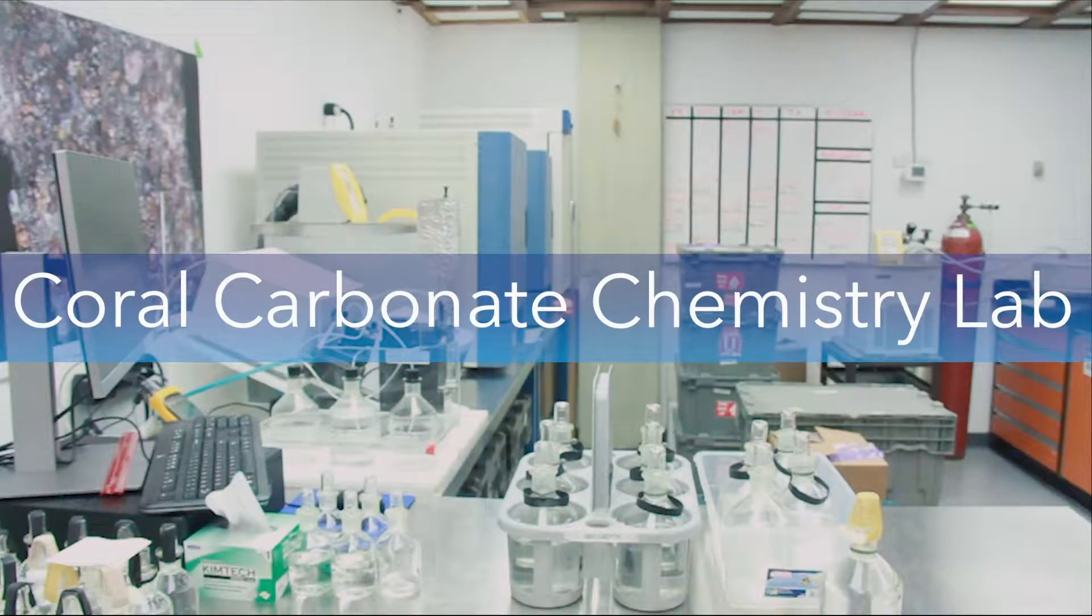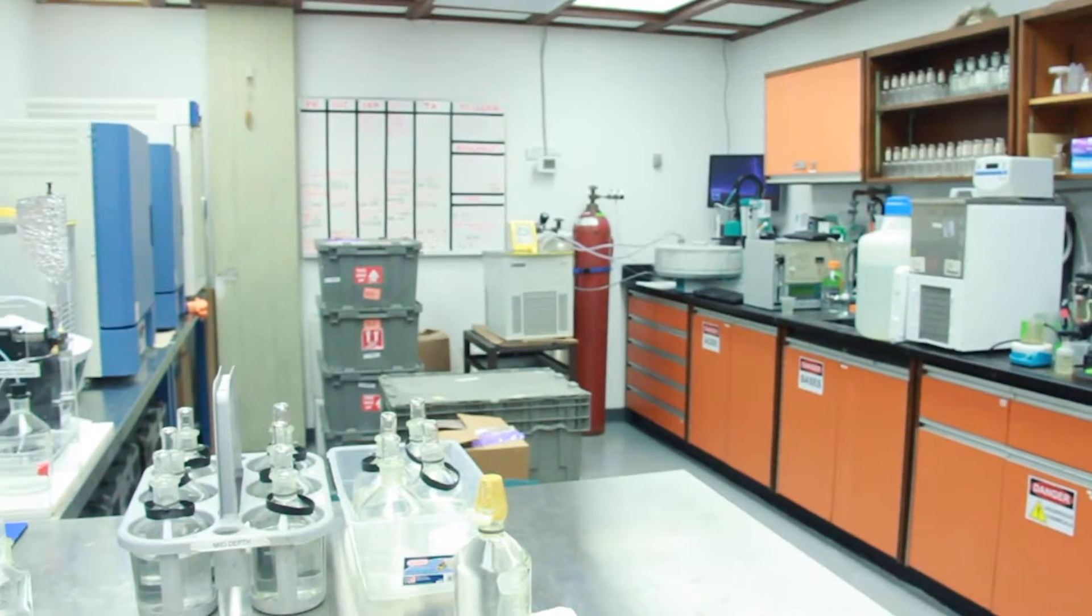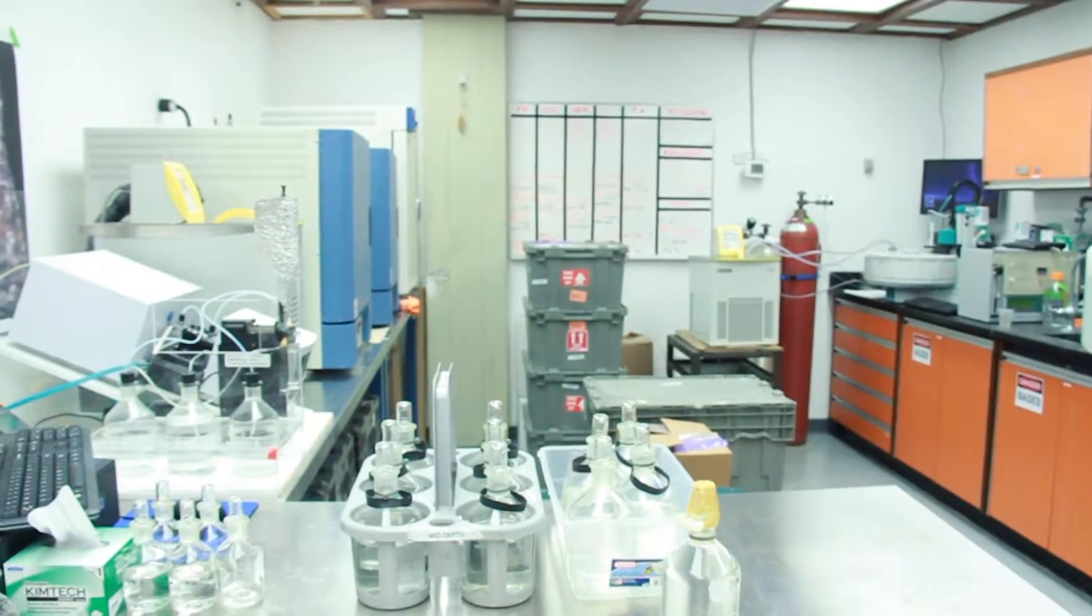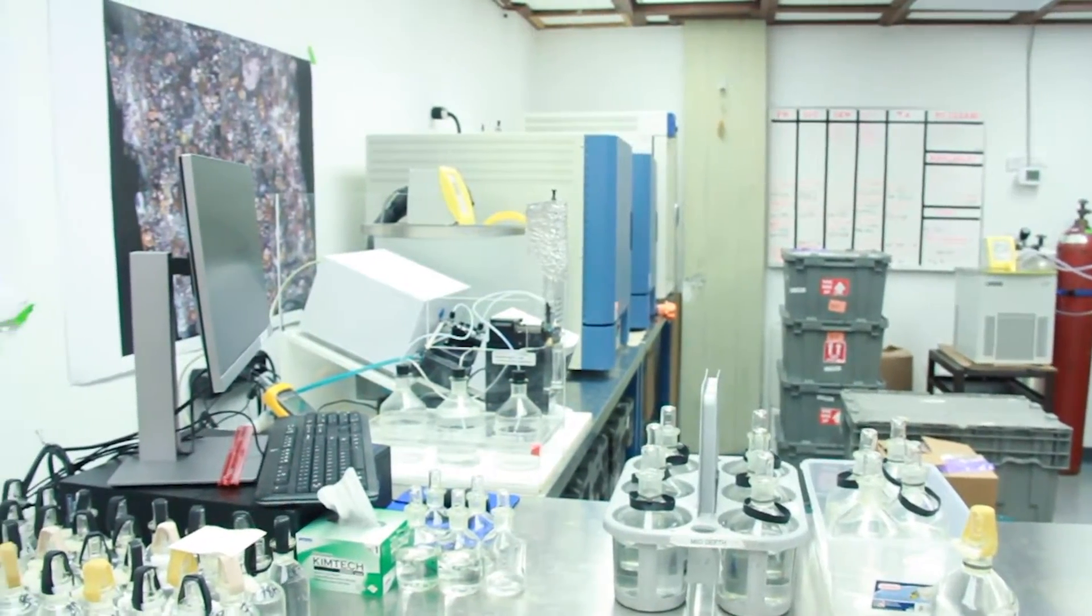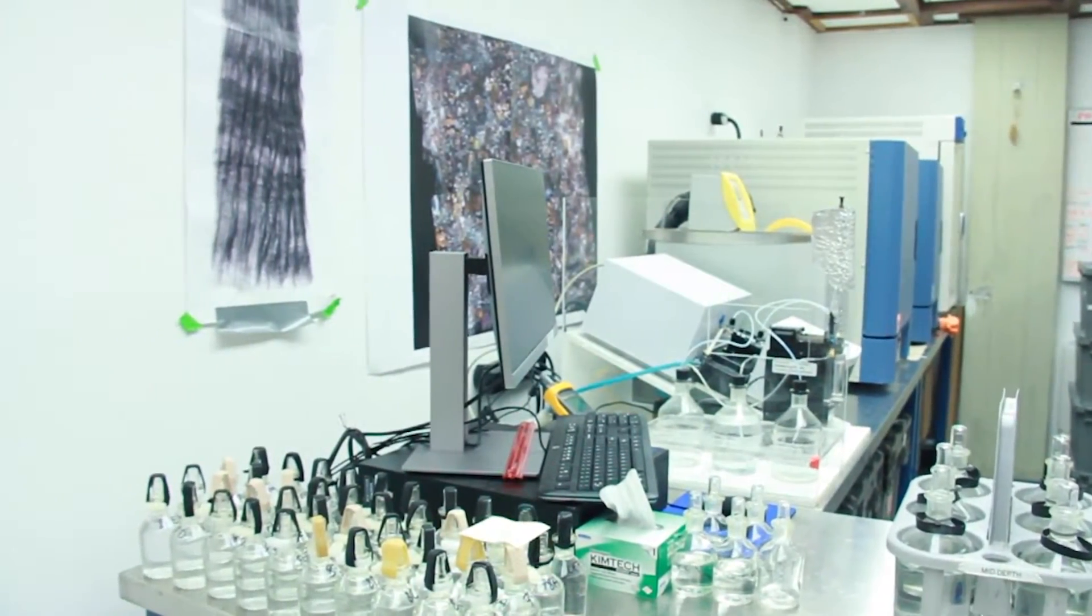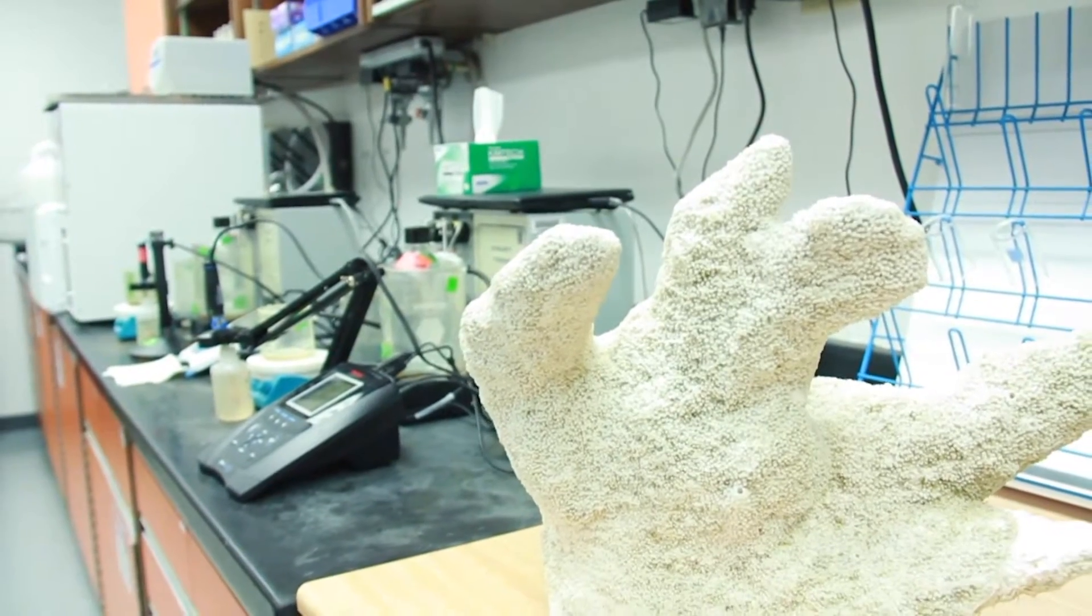Coral ecologists use the Coral Carbonate Chemistry Lab to precisely measure the carbonate chemistry of water collected at coral reef sites. The samples help to track ocean acidification, measure biological processes on reefs, and calibrate instruments in the field.